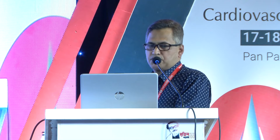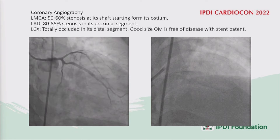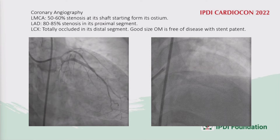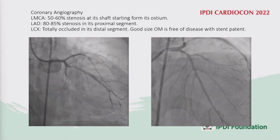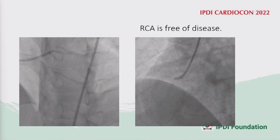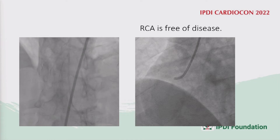He came to us, and in the present situation his ejection fraction was 32% with regional wall motion abnormality. This is the angiogram: the left hand shows significant disease, and the RCA is free of disease.